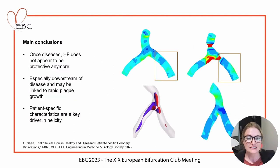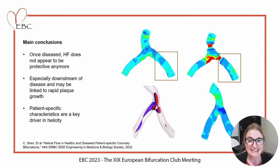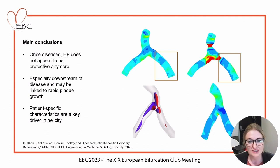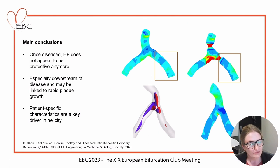In conclusion, once coronary bifurcations are diseased, helical flow and its intensity does not appear to have a protective effect anymore. This is especially true for downstream post-plaque and can be linked to rapid plaque growth. In normal as well as patient-specific disease models, patient-specific characteristics are a key driver in helicity, and more research is warranted, as many aspects of atherosclerosis development are likely linked to this helicity flow indicator.